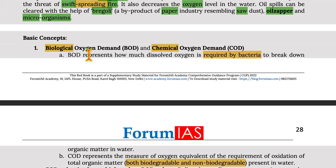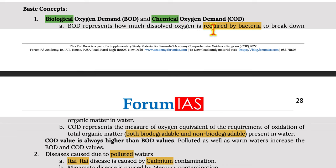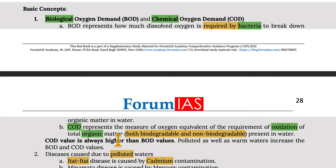BOD (Biological Oxygen Demand) represents how much dissolved oxygen is required by bacteria to break down organic matter. COD (Chemical Oxygen Demand) represents the measure of oxygen equivalent to the requirement of oxidation of total organic matter — both biodegradable and non-biodegradable — present in the water.